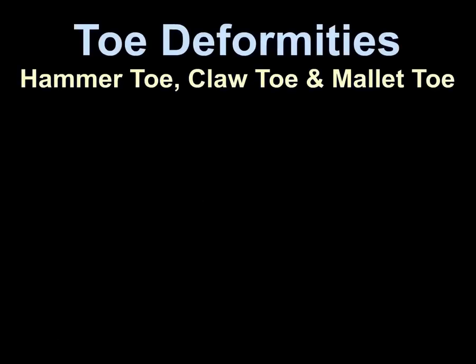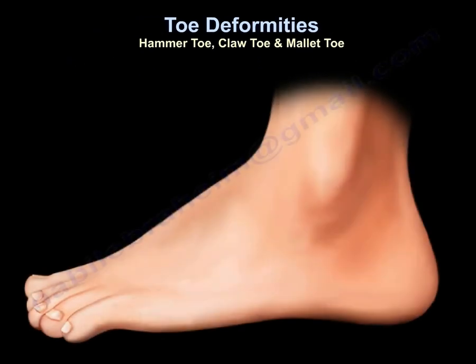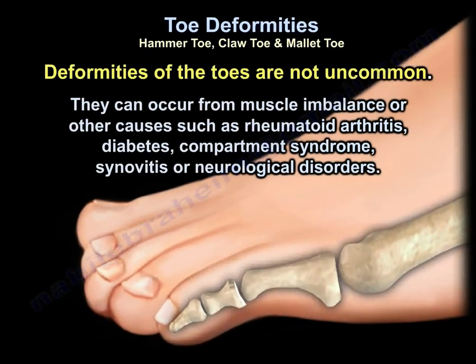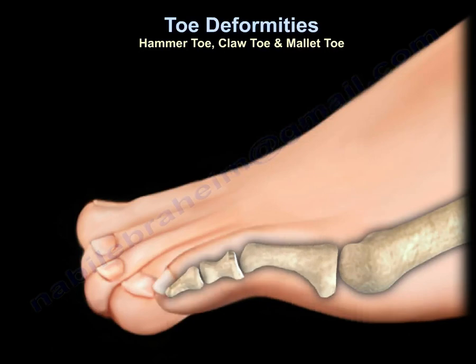Toe deformities: hammer toe, claw toe, and mallet toe. Deformities of the toes are not uncommon. They can occur from muscle imbalance or other causes such as rheumatoid arthritis, diabetes, compartment syndrome, synovitis, or neurological disorders.